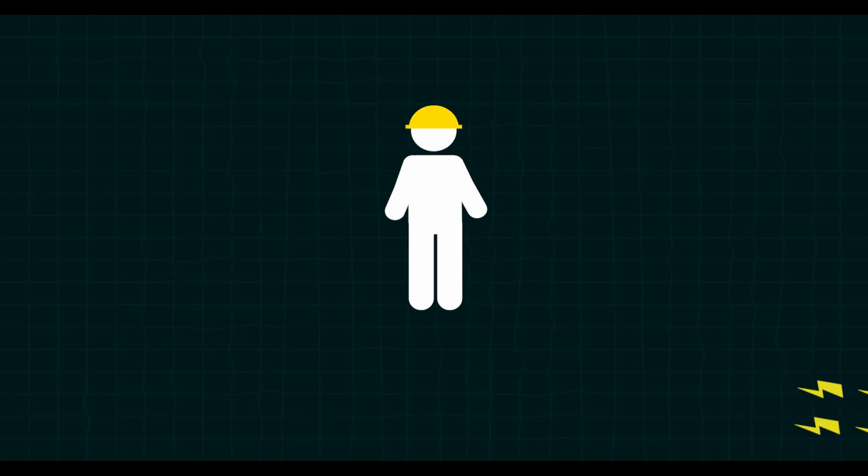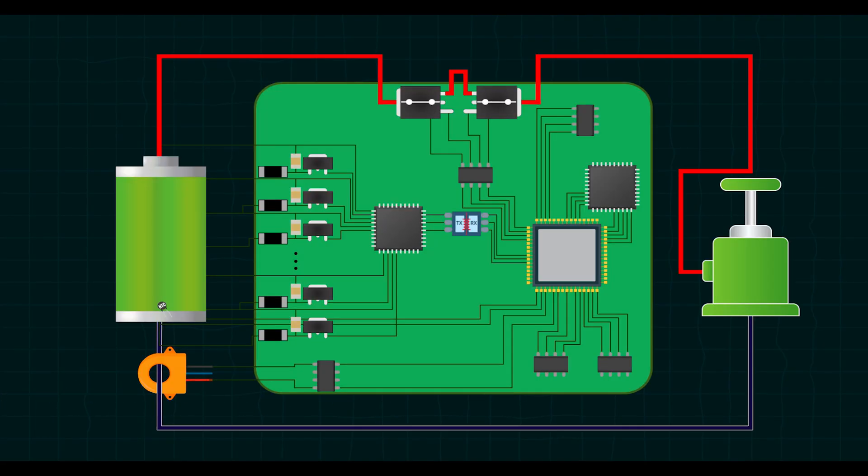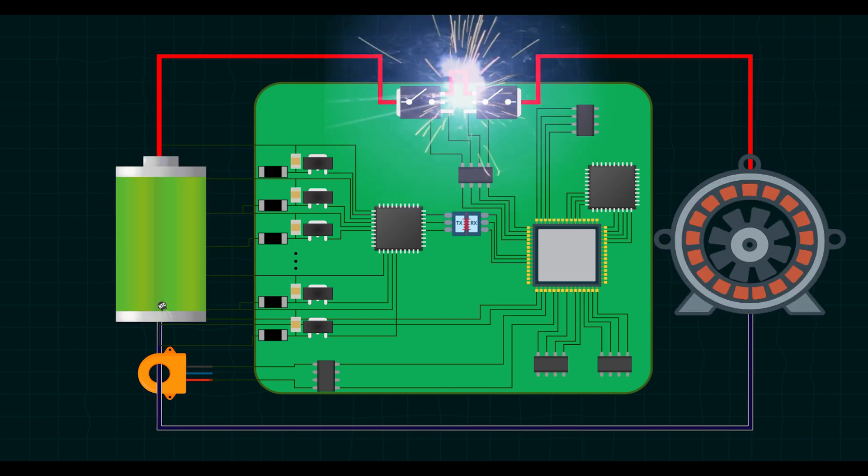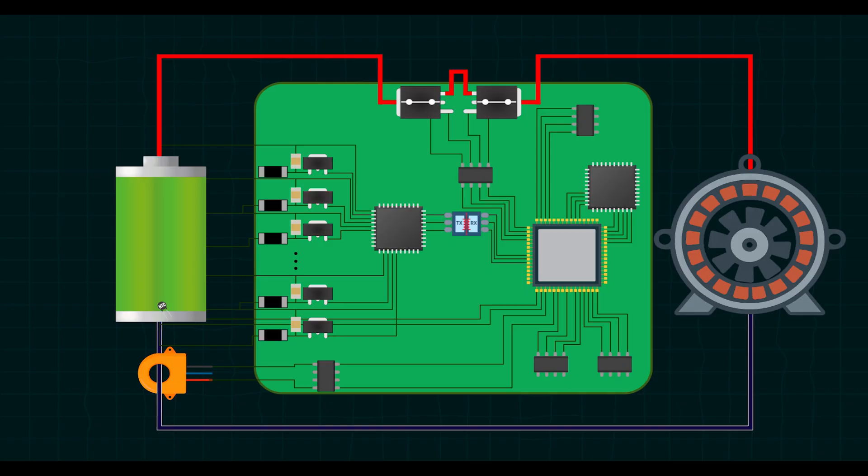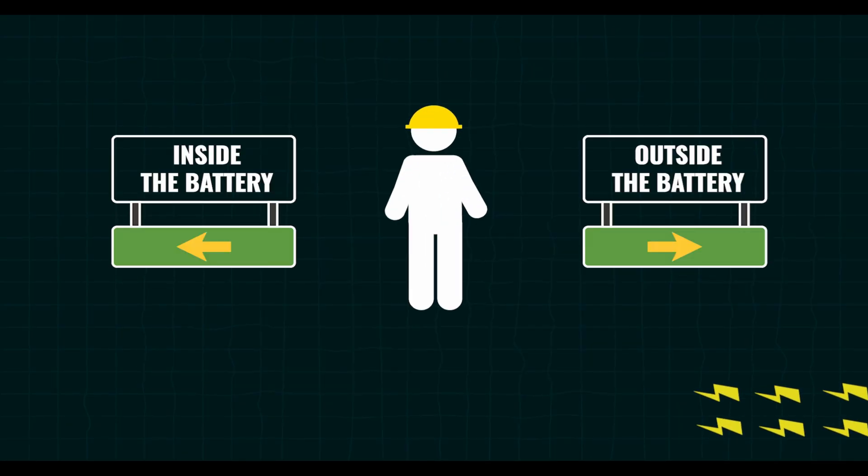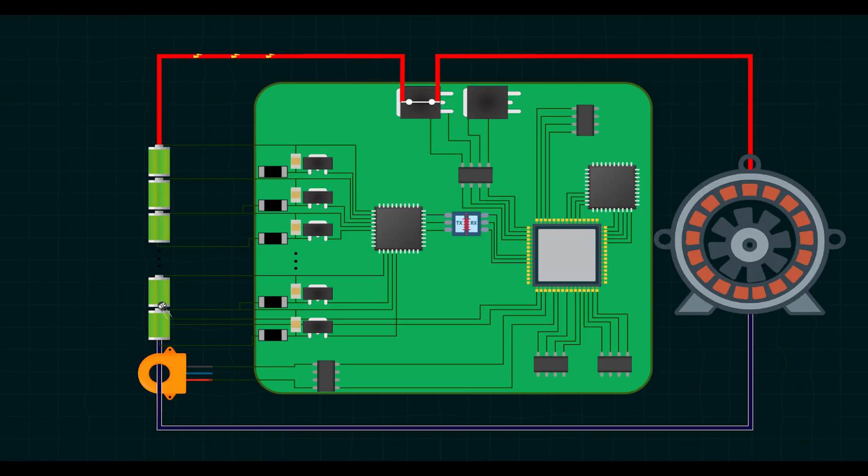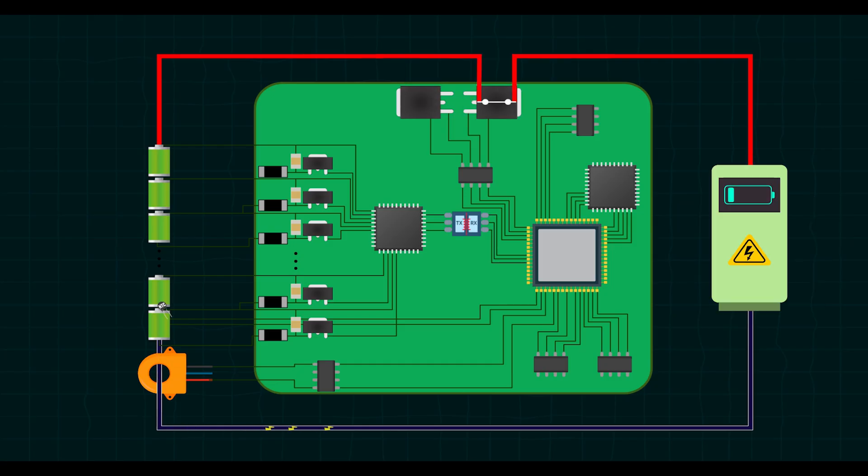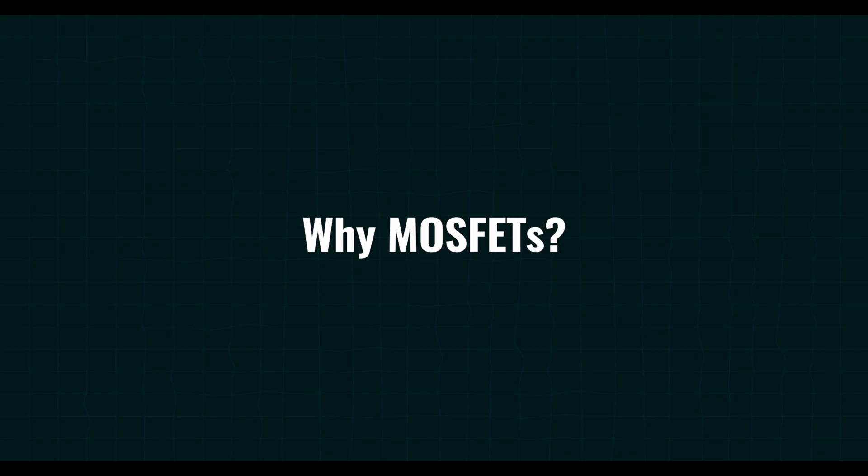Think of switches as traffic controllers. They manage the flow of current. Imagine a busy intersection without any traffic lights. Then vehicles would collide, causing chaos and accidents. Similarly, in BMS, we need precise control to ensure electricity flows safely without causing damage or hazards. Conditions such as overcharge, over-discharge and short circuits can be catastrophic for batteries and connected systems. Switches in BMS act just like these traffic lights. They allow us to safely disconnect or reconnect the battery from the load or charger precisely when necessary, ensuring the battery and other components remain safe and operational. Now we know why we need switches in BMS.